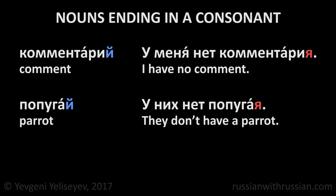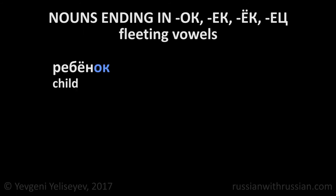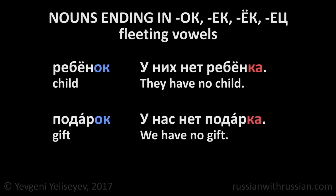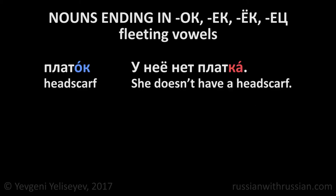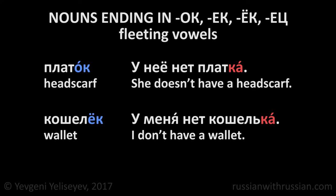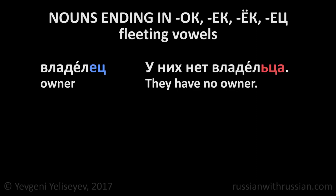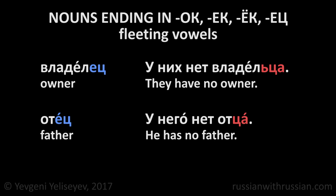The majority of nouns ending in -ок, -ек, -ёк lose a vowel in the genitive. Ребёнок — child. У них нет ребёнка. They have no child. Подарок — gift. У нас нет подарка. We have no gift. Платок — headscarf. У неё нет платка. She doesn't have a headscarf. Кошелёк — wallet. У меня нет кошелька. I don't have a wallet. Владелец — owner. У них нет владельца. They have no owner. Отец — father. У него нет отца. He has no father.